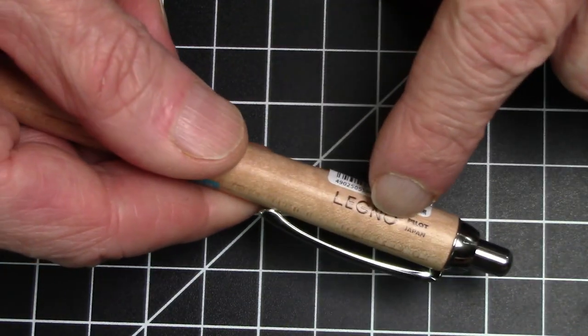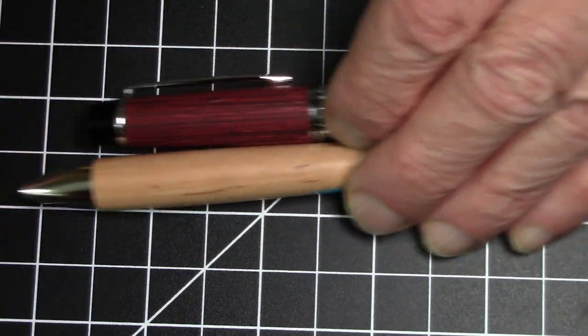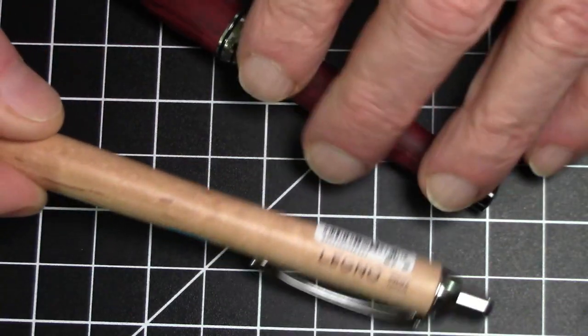And this is the ballpoint. This Legno is a ballpoint. So this is a much bigger pen, obviously. It's a full-size pen. It's a ballpoint, a very nice ballpoint.